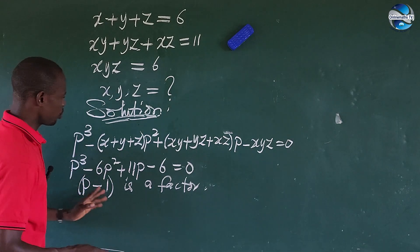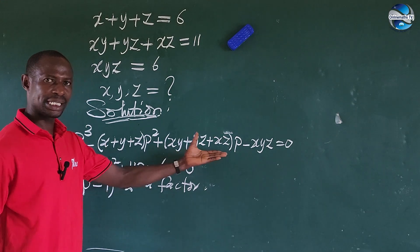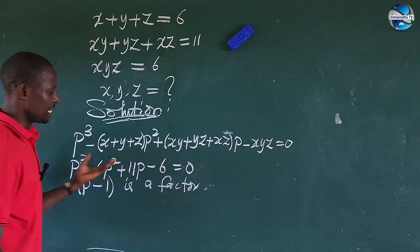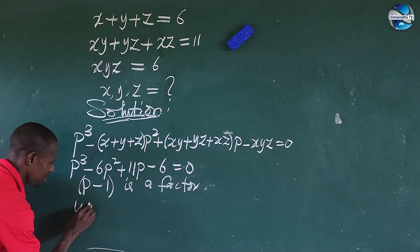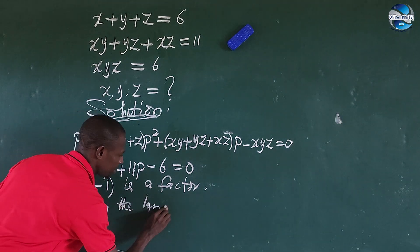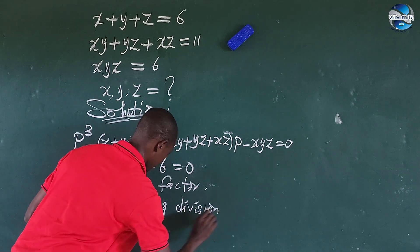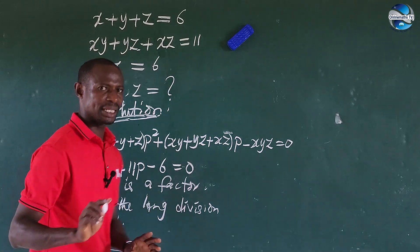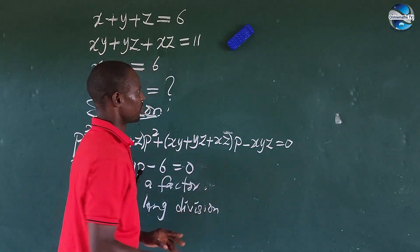We are going to use the long division method to get the second and third root from this equation. We could also use the synthetic method, but let's go with the long division method as it is more familiar.